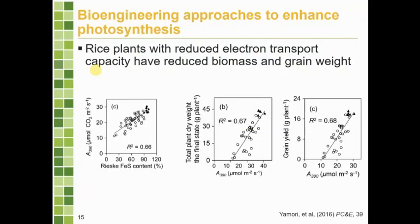Another example increased electron transport efficiency - the conversion of photons to chemical energy that drives photosynthesis. When they reduced this efficiency, they saw a decrease in photosynthesis - the solid shapes are wild types and the other shapes are transgenics or mutants. Plotting plant dry weight or biomass, they saw a correlation between photosynthetic rates and plant biomass, and also a correlation between grain yield and photosynthetic rates. They propose that going the other direction could potentially increase biomass and yield.